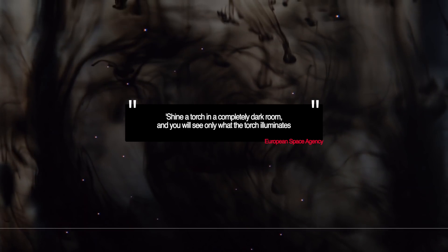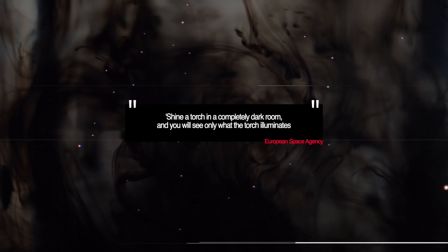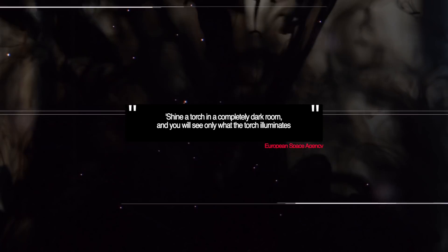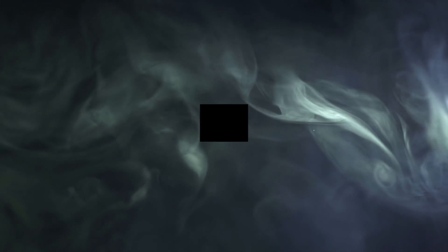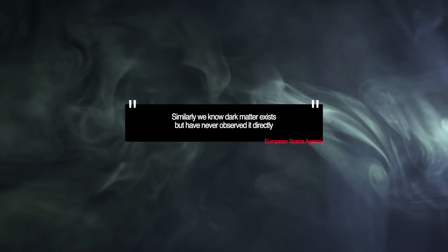The European Space Agency says, shine a torch in a completely dark room, and you will see only what the torch illuminates. That doesn't mean that the room around you does not exist. Similarly, we know dark matter exists but have never observed it directly.